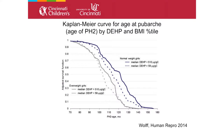We also noted, as did other groups, a later onset of pubic hair stage 2 with the high molecular weight phthalates. Looking at the curves, the effect is much more pronounced in normal weight girls — with higher exposure showing delayed development compared to lower exposure.